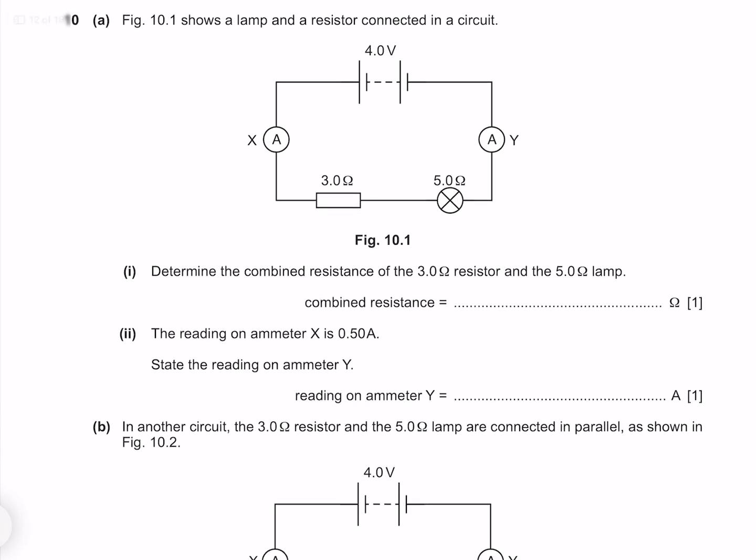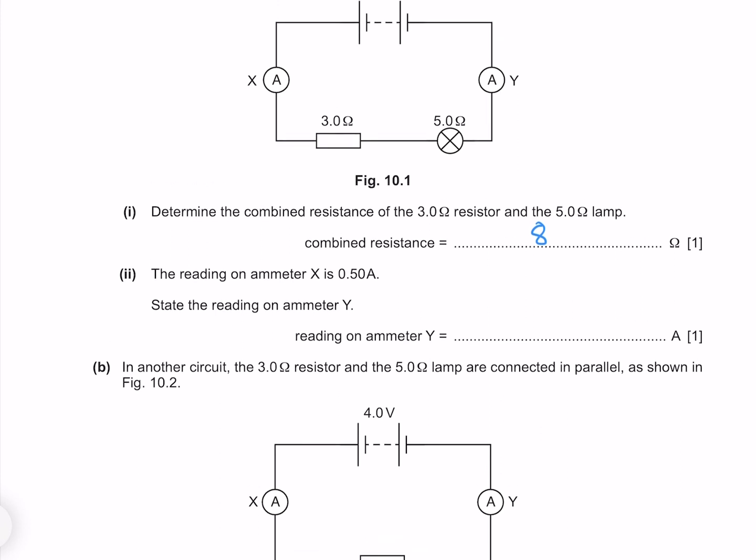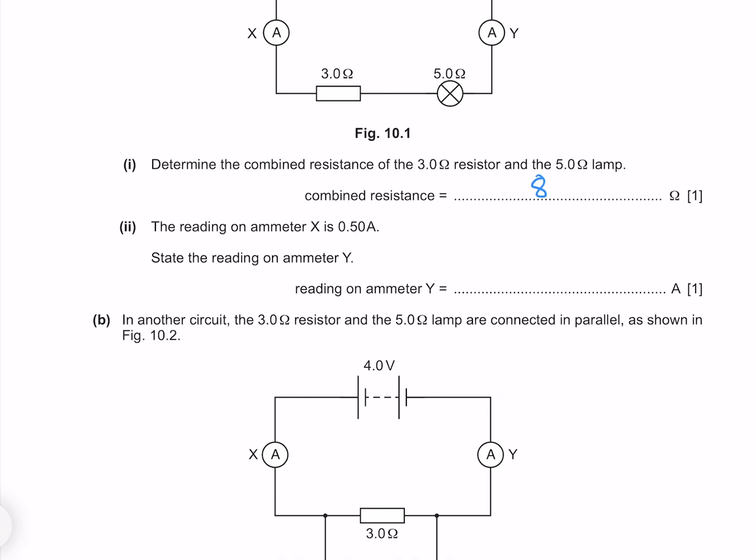Figure 10.1 shows a lamp and a resistor connected in a circuit. Determine the combined resistance of the 3 ohm resistor and the 5 ohm lamp. Because they are in series their resistances add together, giving us 8 ohms. The reading on ammeter X is 0.5 amps. State the reading on ammeter Y. Because this is a series circuit, the current is the same at all points, so our reading on ammeter Y is the same as ammeter X, 0.5 amps.